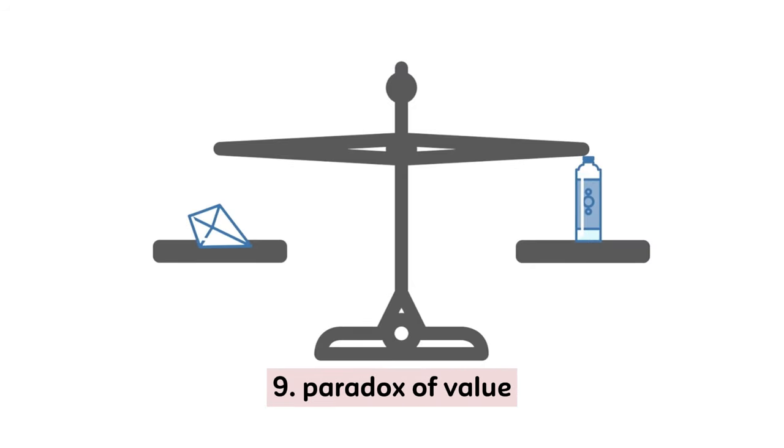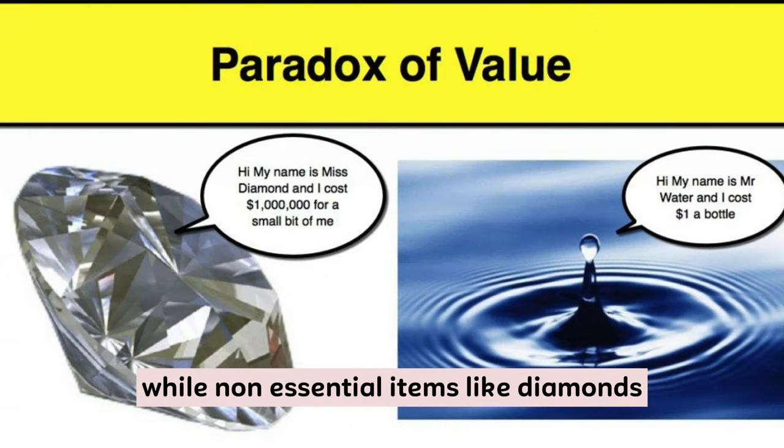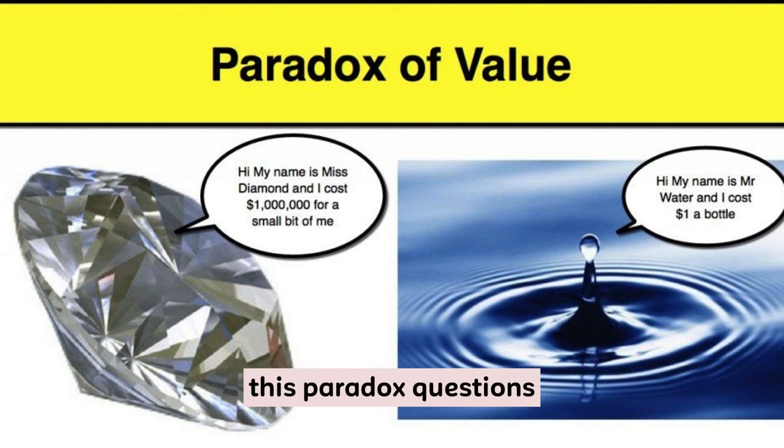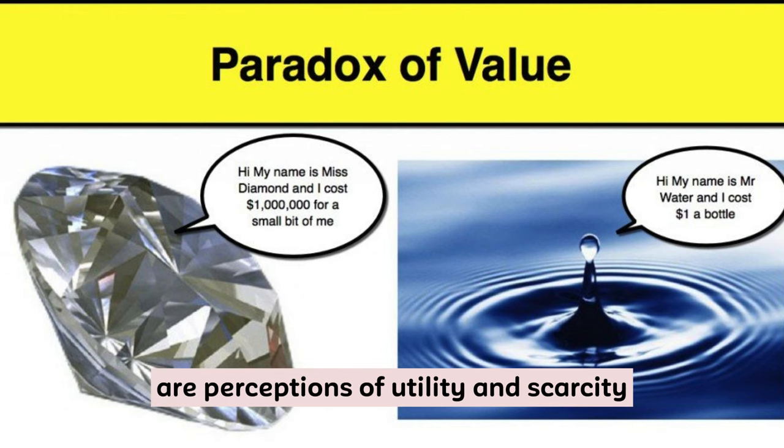9. Paradox of Value. Why do essential items like water have little value, while non-essential items like diamonds have high value? This paradox questions our perceptions of utility and scarcity.